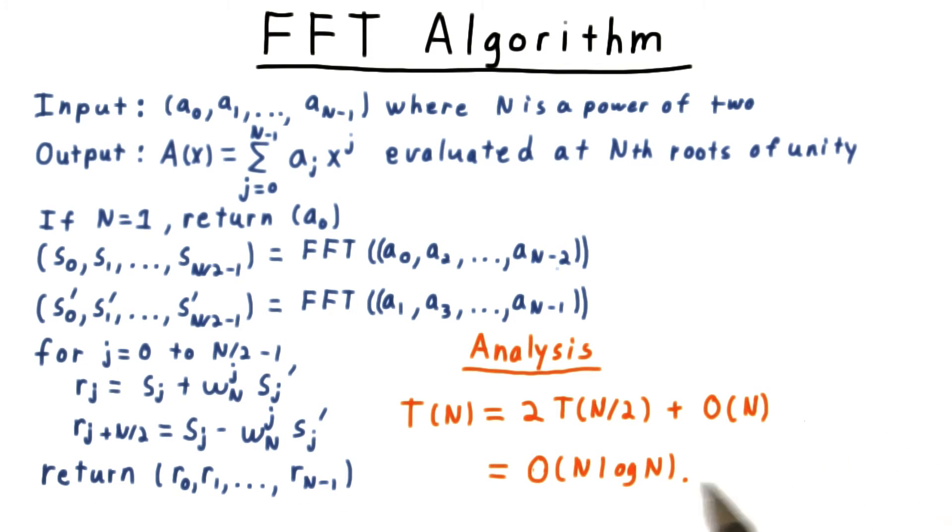By the master theorem, this gives us a running time of order n log n. This is much better than the n squared running time from the naive evaluation by Horner's rule or by matrix multiplication.